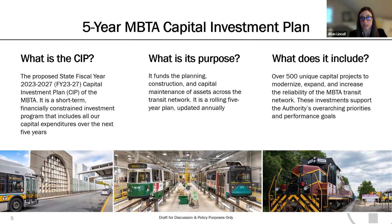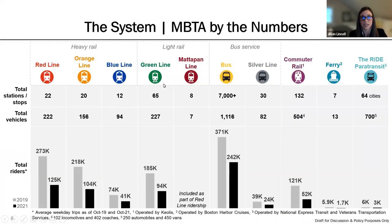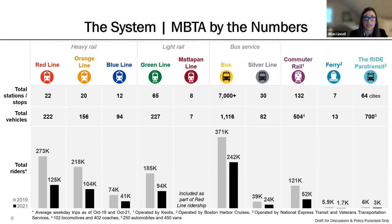It is a rolling five-year plan that is updated annually. This slide offers a high-level look at the MBTA system, which includes three heavy rail lines, two light rail lines, bus, commuter rail, ferry, and the Ride, which is the MBTA's paratransit service.